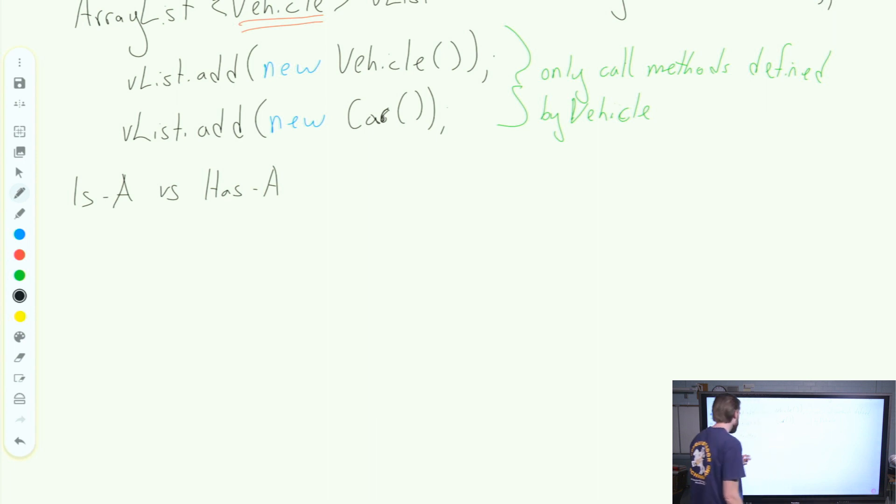So the is-a and has-a. In an is-a relationship, your new object, your new class definition, is a version of the parent class you're inheriting from. It's is-a, right? A car is a vehicle. This is our is-a. A car is a vehicle. So it makes sense that the car inherits from the vehicle.